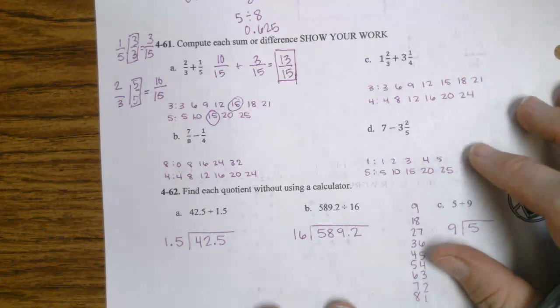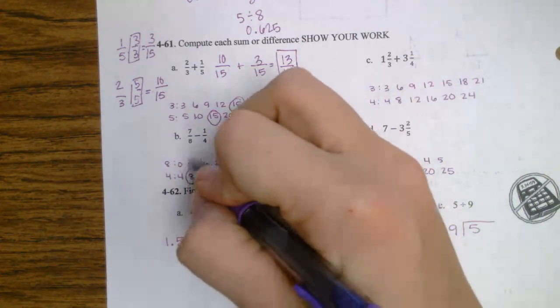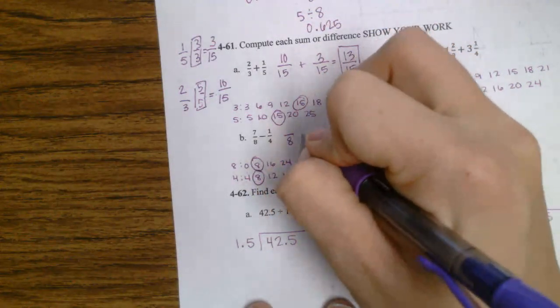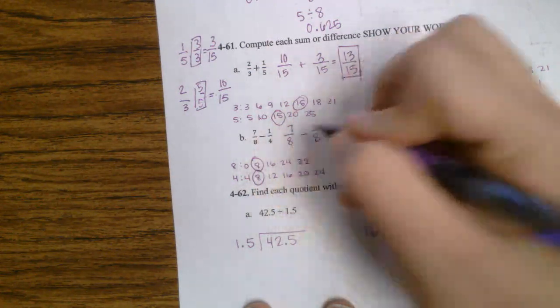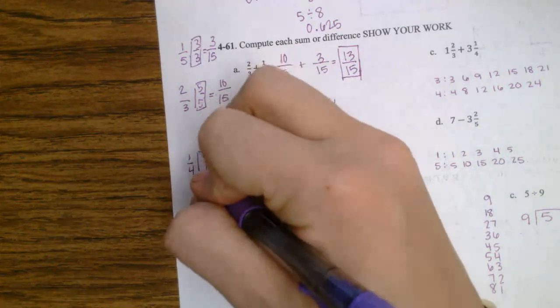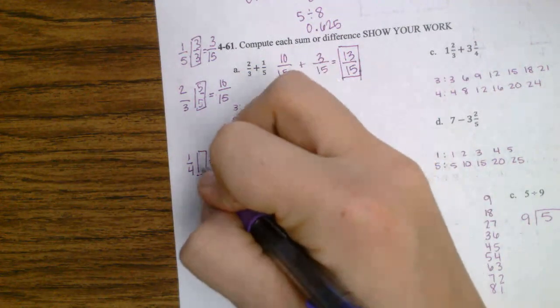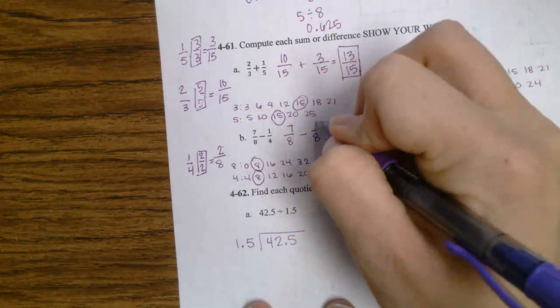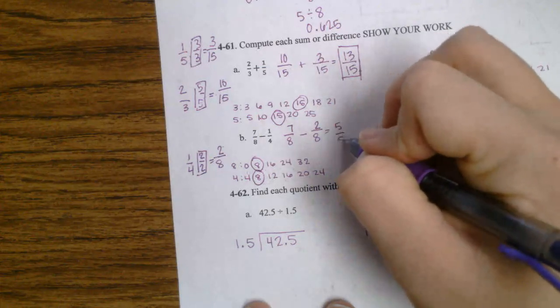Going to part B, I look down here in my list of multiples. 8. So I know my new fractions are going to be out of 8. 7 eighths is already out of 8, so I don't have to change anything with that. I just have to take 1 fourth, figure out what I have to do to make it out of 8. Well, 4 times 2 is 8, so 1 times 2 is 2. 7 eighths minus 2 eighths equals 5 eighths.